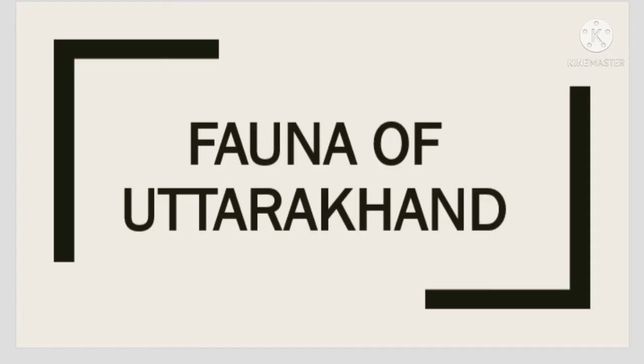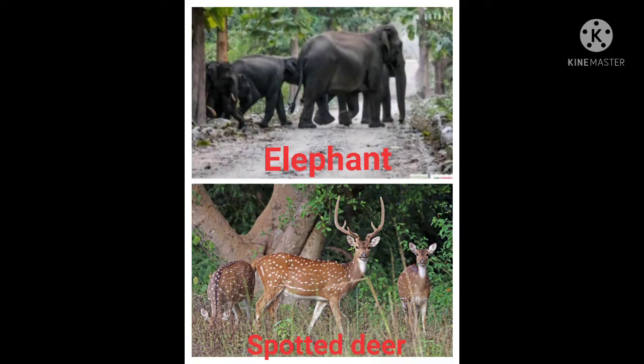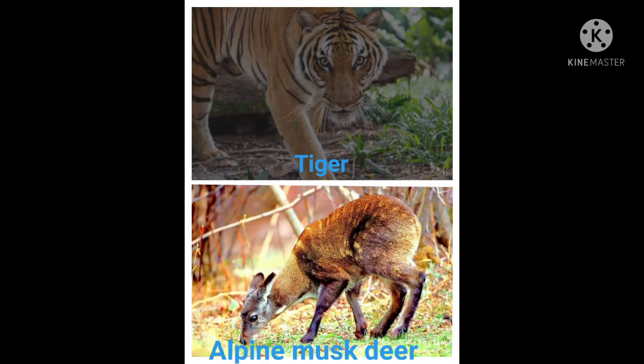Now let us see some fauna species of Uttarakhand. Nearly 18,000 elephants are found in Uttarakhand. Spotted deer, tiger, and Alpine Musk Deer are also found in Uttarakhand.